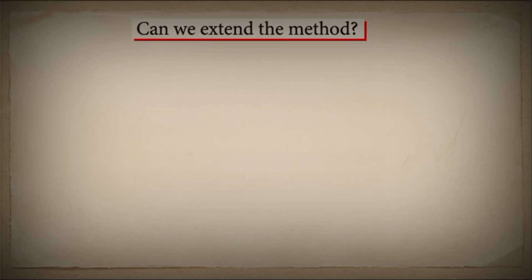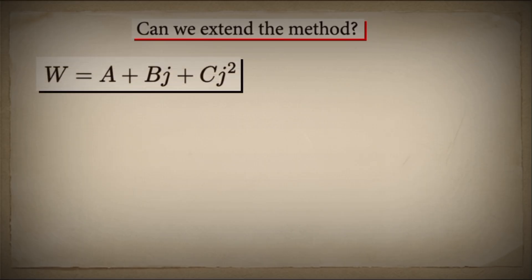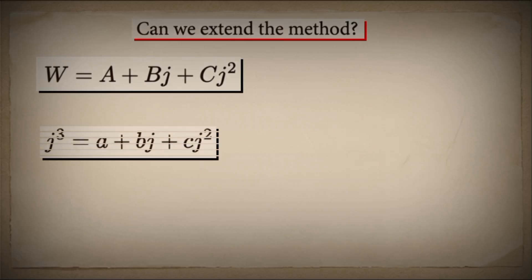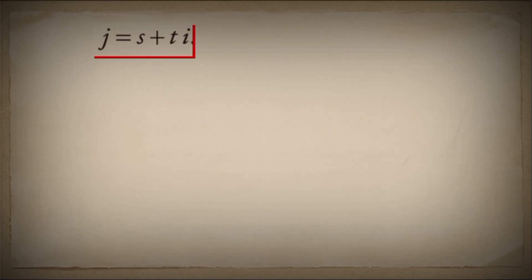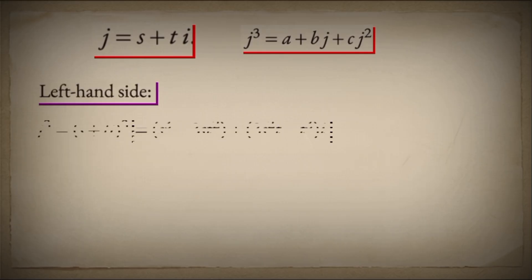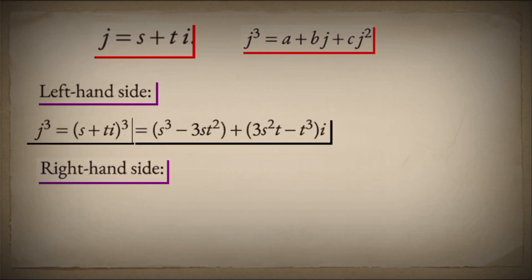We define a cubic number system with a new symbol, j. Our cubic numbers take the form w equals a plus bj plus cj squared. And we impose the corresponding rule for a monic cubic: j cubed equals a plus bj plus cj squared. Surely, if this worked for quadratics, it should work for cubics. Once again, we assume j can be represented as a complex number, j equals s plus ti. We substitute this into our cubic rule, j cubed equals a plus bj plus cj squared, and expand j cubed using the binomial theorem.